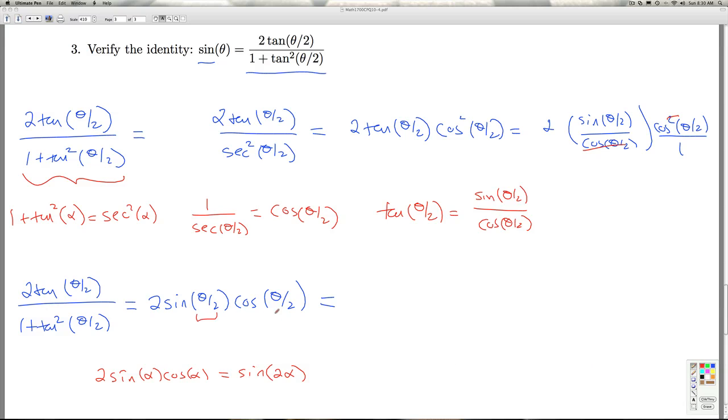And so here, the angle I'm looking at is theta over 2. So this is none other than sine of twice that angle. And 2 times theta over 2 is just theta. And there we have it. That'll do it for number 3.